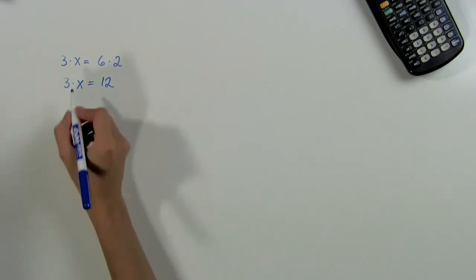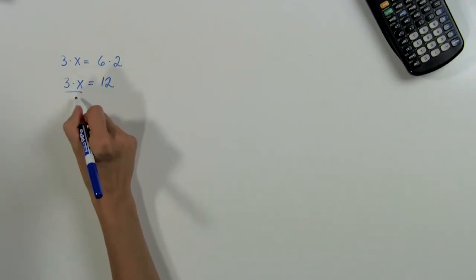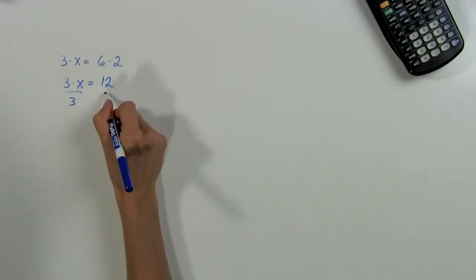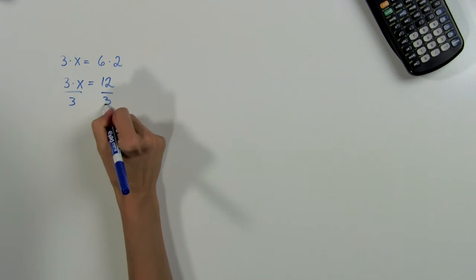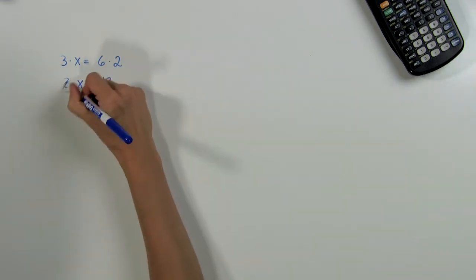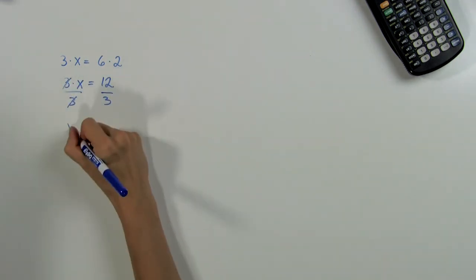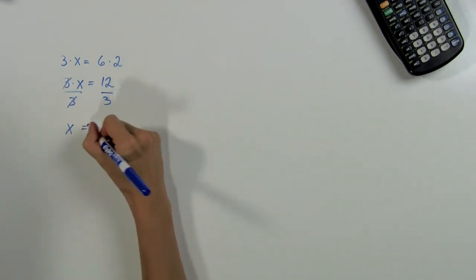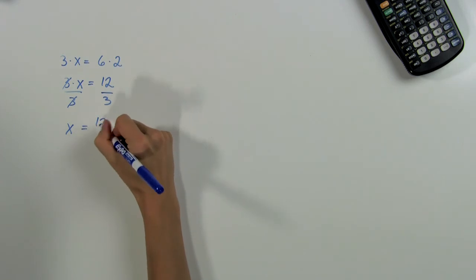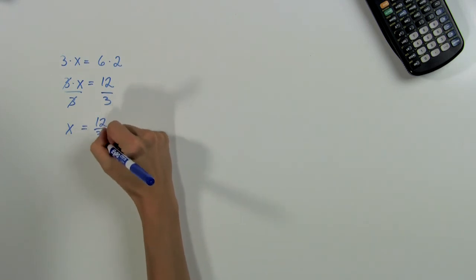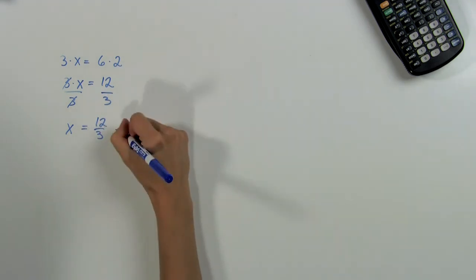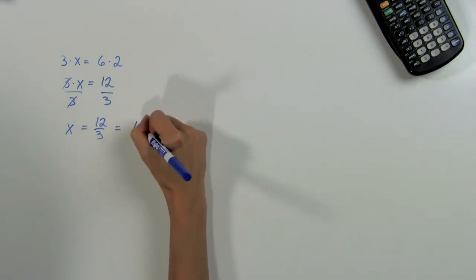So let's divide both sides by 3, and these 3's on the left will cancel out. That leaves us with x is equal to 12 divided by 3, and we know that that is equal to 4.